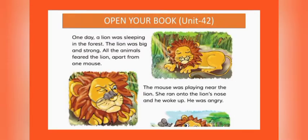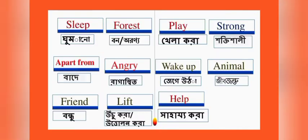Here is the story. Open your book, Unit 42. Before reading out the passage, we will learn the key words of this passage. If you know the key words, it would be very easy to understand the passage properly. The first key words: 'slip' means ghumano; 'forest' means ban, arno, or jungle.